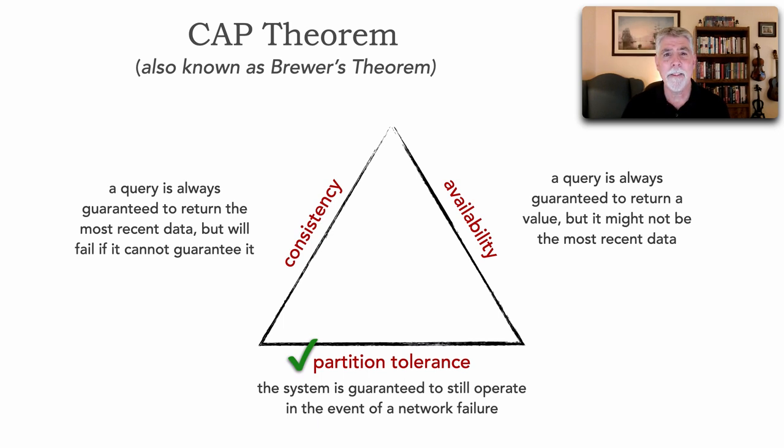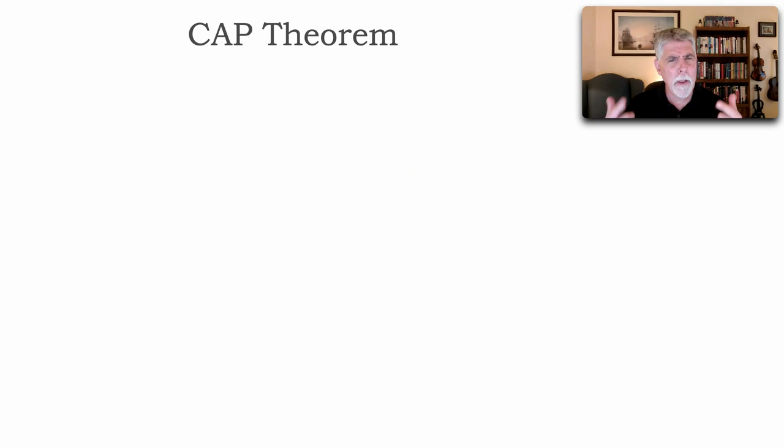So the point is that one's a given, which means CAP Theorem really is stating, between all three of these, pick one. We could have partitioning and consistency, or partitioning and availability, because networks do fail. So let's take a look at each of these choices. I want to graphically show these choices through topologies to really show you what's going on between consistency and availability, so we can really understand the choices that we have.